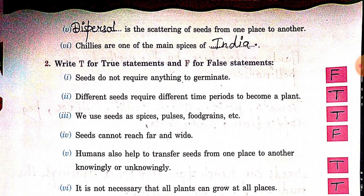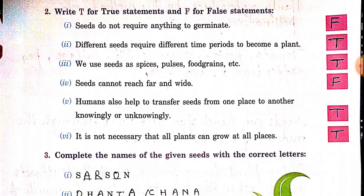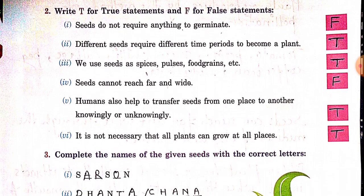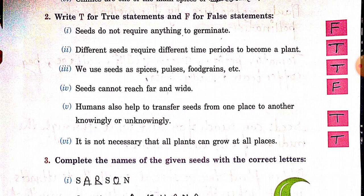Sixth: chilis are one of the main spices of India. Our second question: write T for true statement and F for false statement. First — seeds do not require anything to germinate. False.